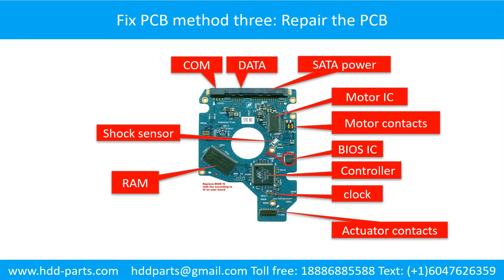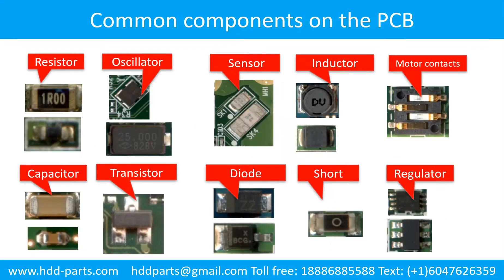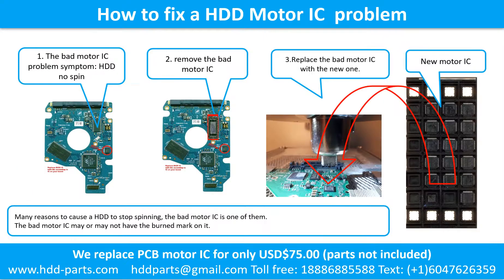This picture shows the basic components and their functions on the hard drive printed circuit board, and this picture shows some regular components on the printed circuit board. How to fix a hard drive motor IC problem: The bad motor IC problem symptom is that the hard drive does not spin. There are many reasons to cause a hard drive to stop spinning — the bad motor IC is one of them. The bad motor IC may or may not have a burned mark on it. Remove the bad motor IC and replace it with the new one.